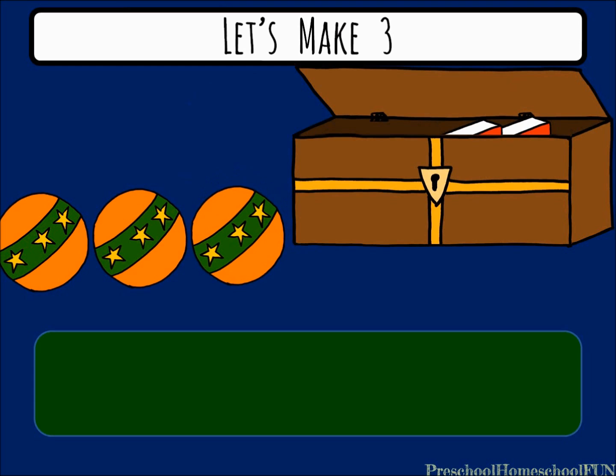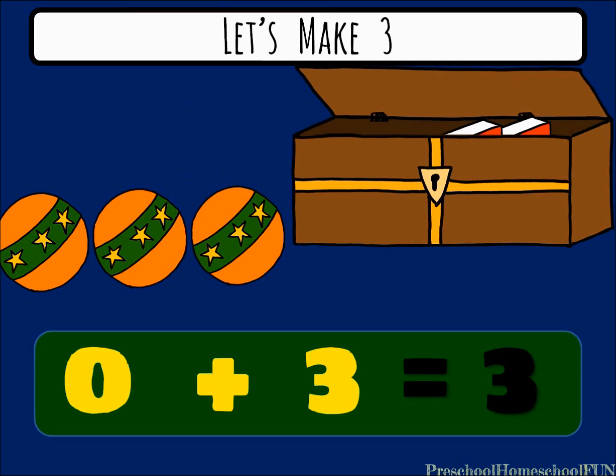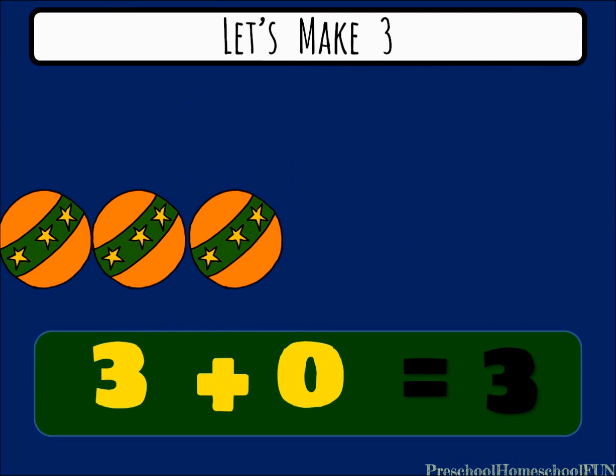3 bouncy balls came out of the toy box. 0 plus 3 equals 3. If we don't add any more bouncy balls, we can write it this way. Let's say 3 plus 0 equals 3.